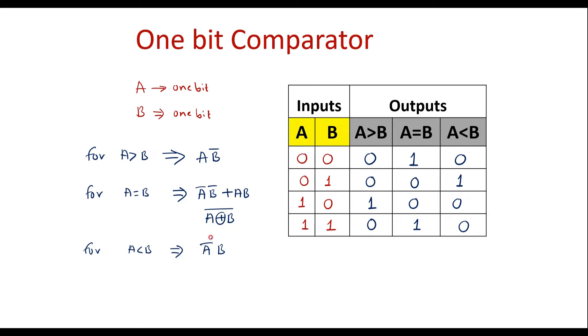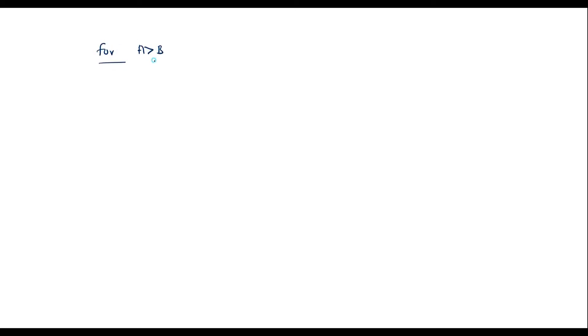With the help of these Boolean equations, we can easily draw the circuit. These output equations can also be obtained using a K-map. Since we have two variables, we should use a two-variable K-map. I will show that as well — first I will be considering the K-map for a greater than b.